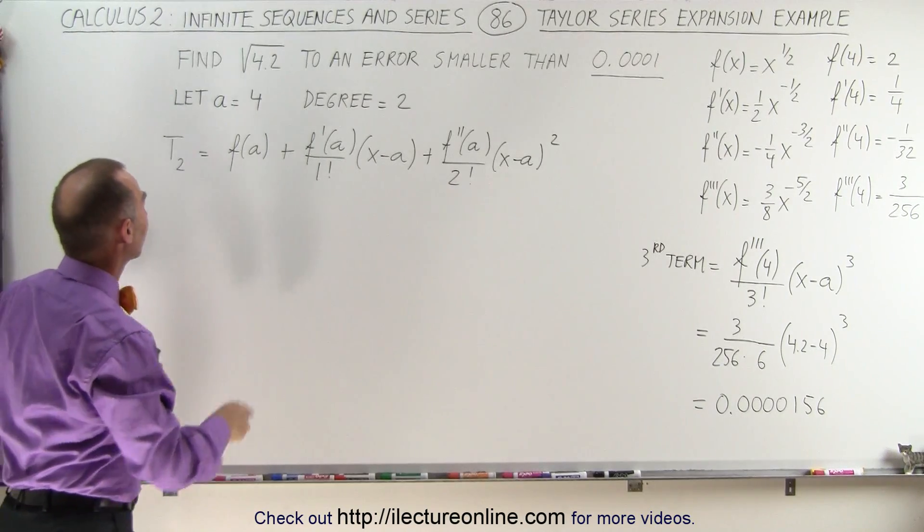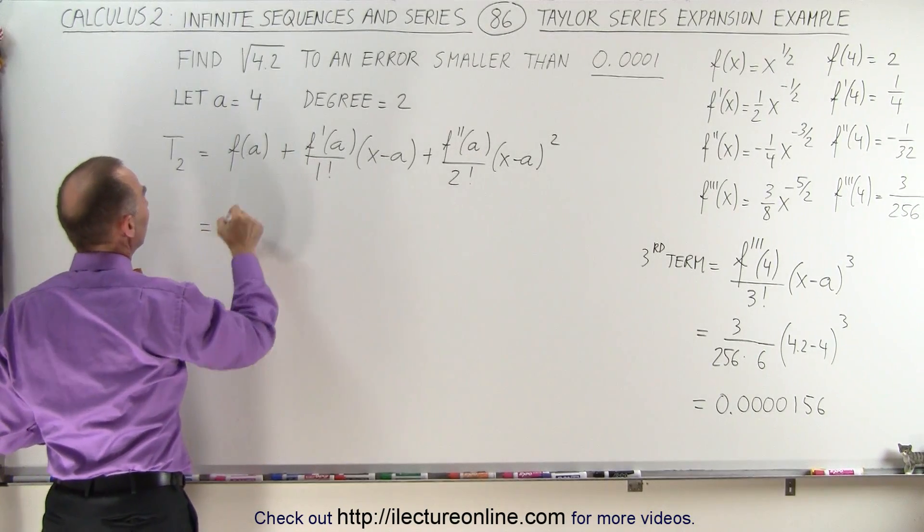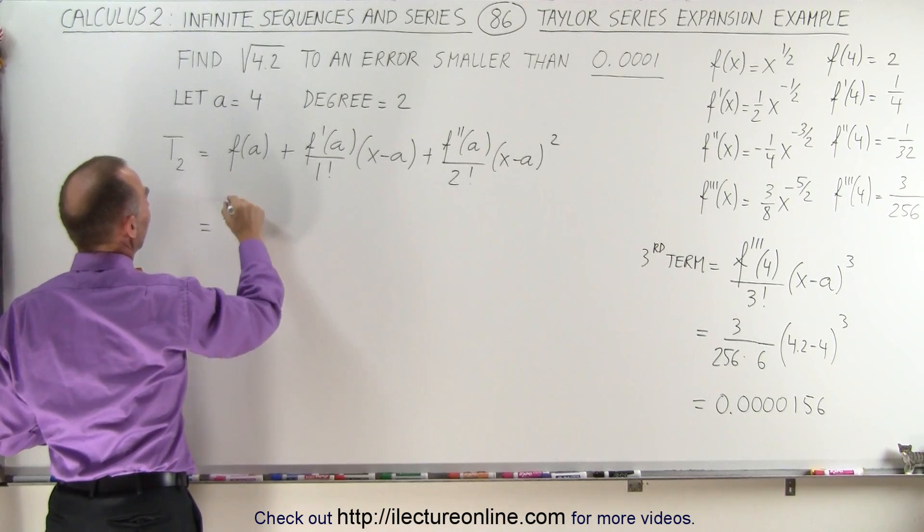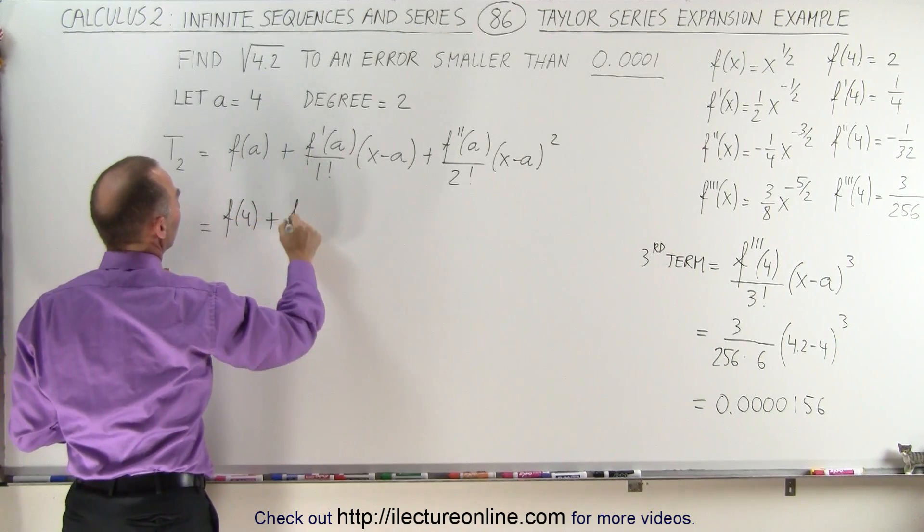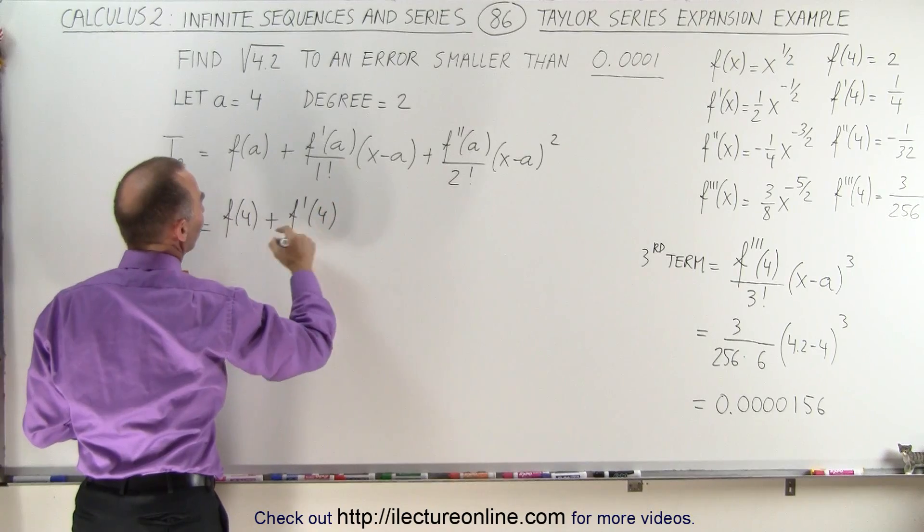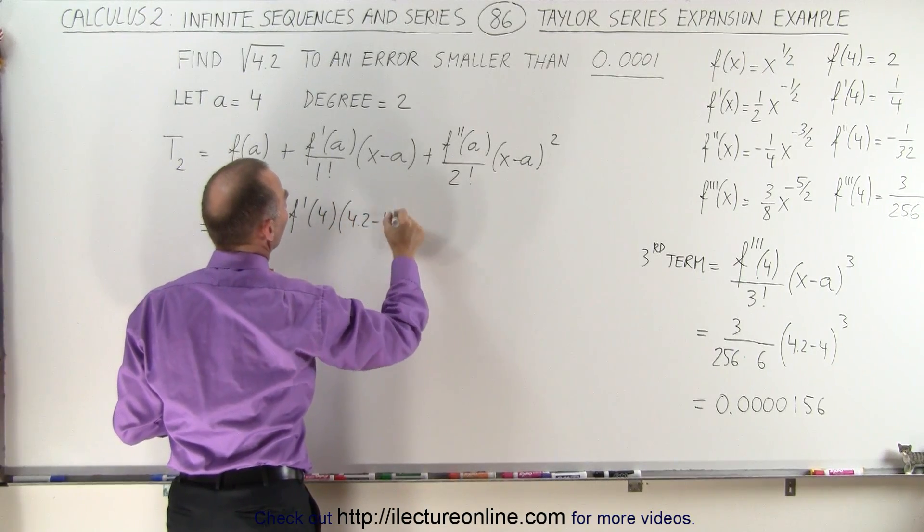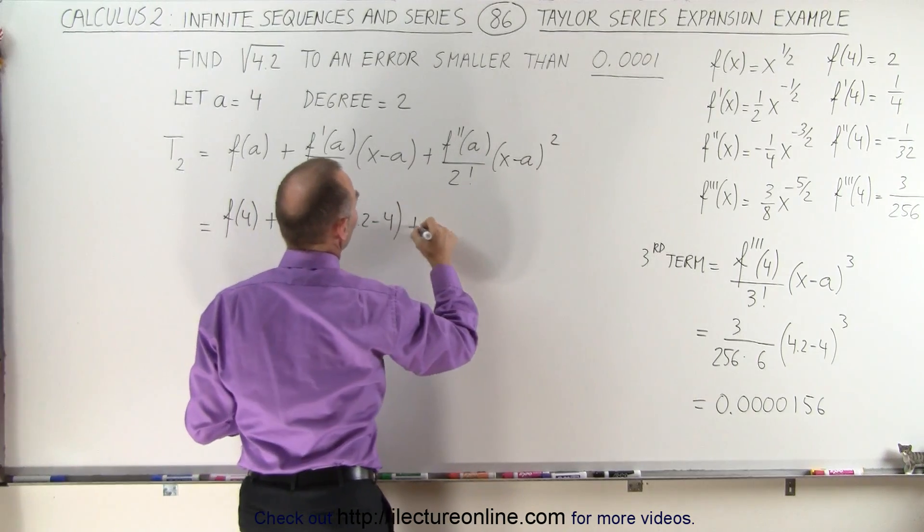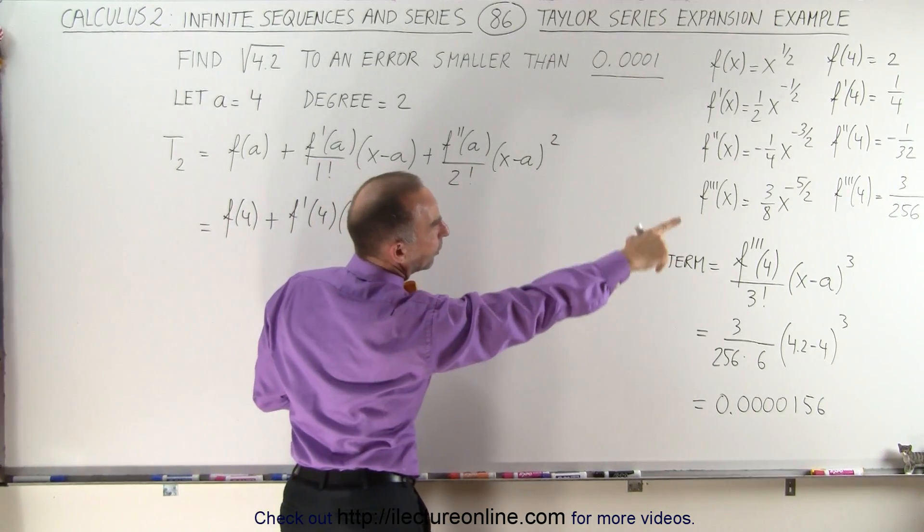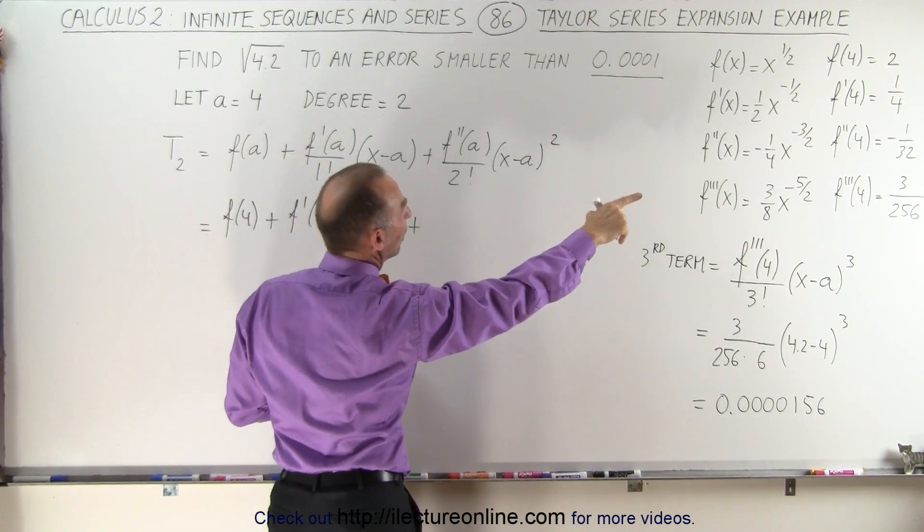Let's go ahead and plug in the values and see what we get. This is equal to f evaluated at 4 plus the derivative evaluated at 4 divided by 1 times 4.2 minus 4 raised to the first power plus the second derivative evaluated at 4 divided by 2 times 4.2 minus 4 squared.